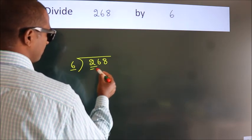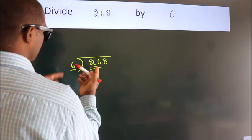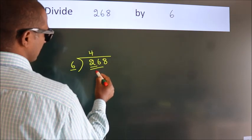So we should take two numbers: 26. A number close to 26 in the six table is six fours, 24.